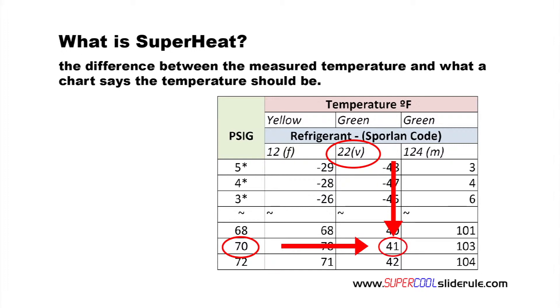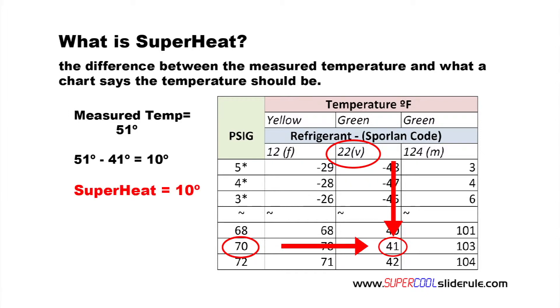If we measure the temperature of the refrigeration suction line and it is actually 51 degrees, this is 10 degrees warmer than it should be, so our superheat is 10 degrees.